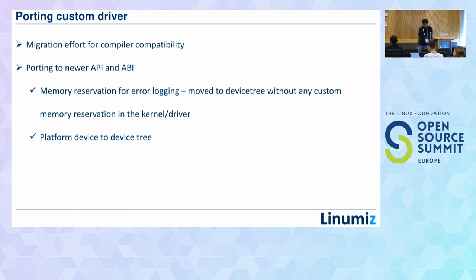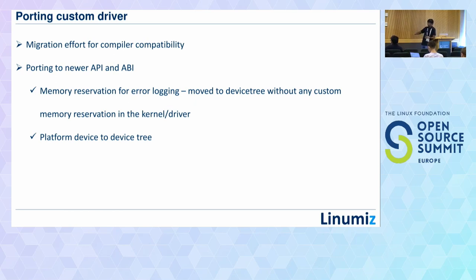We also had custom drivers built for error logging in telematics systems — capturing state when the system abruptly resets and sending logs to a backend server. Previously, this used kernel-side memory reservation via manual platform device creation and patching. Migrating to 5.10, we used the device tree reserved memory approach: the kernel automatically reserves the memory region, and the device is automatically created for user space consumption. ABI and customer compatibility aspects also had to be updated.